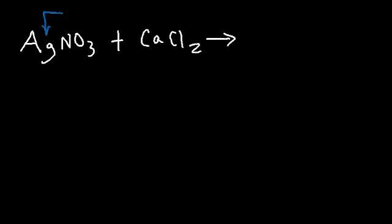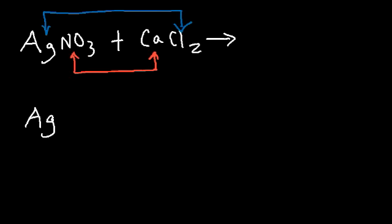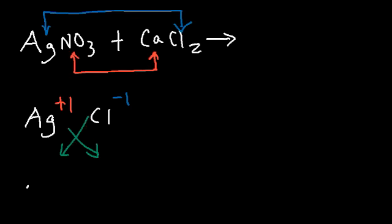In double replacement reactions, the first and last ions pair up together, and the two in the middle pair up as well. Silver has a plus one charge — you can tell because nitrate has a minus one charge, and with only one nitrate, silver must be plus one. Chloride has a negative one charge; all halogens like fluoride, chloride, bromide, and iodide have negative one charges as ions. Since the magnitudes of silver and chloride charges are equal, you can write them in a one-to-one ratio using the criss-cross method: Ag¹Cl¹, so we just write AgCl.